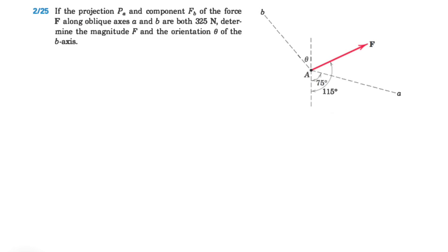Welcome back. In today's question, we have a problem from the second chapter of the Merriam textbook. We know the projection Pa and the component Fb of the force F along oblique axes a and b are both 325 Newtons. We need to determine the magnitude F and the orientation θ of the b-axis.